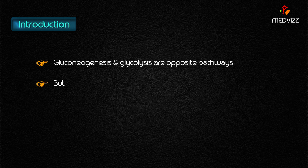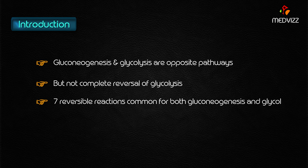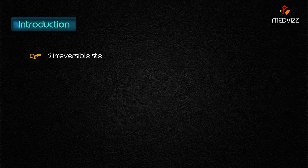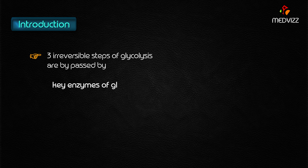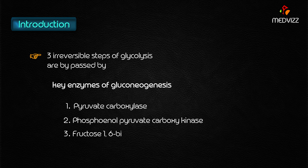However, gluconeogenesis is not completely a reversal of glycolysis. There are seven reversible reactions of glycolysis common to both pathways, but three irreversible steps of glycolysis are bypassed by different enzymes called the key enzymes of gluconeogenesis: pyruvate carboxylase, phosphoenolpyruvate carboxykinase, fructose 1,6-bisphosphatase, and glucose-6-phosphatase.